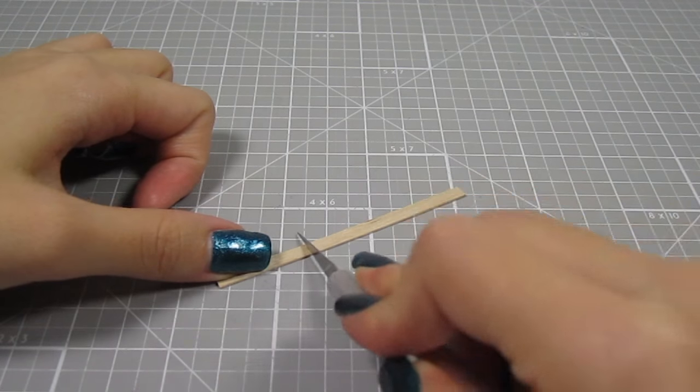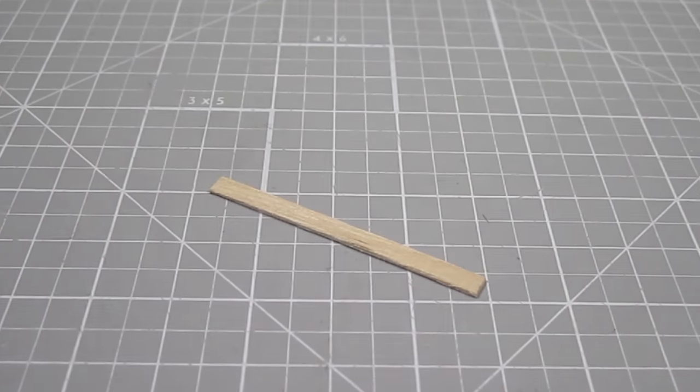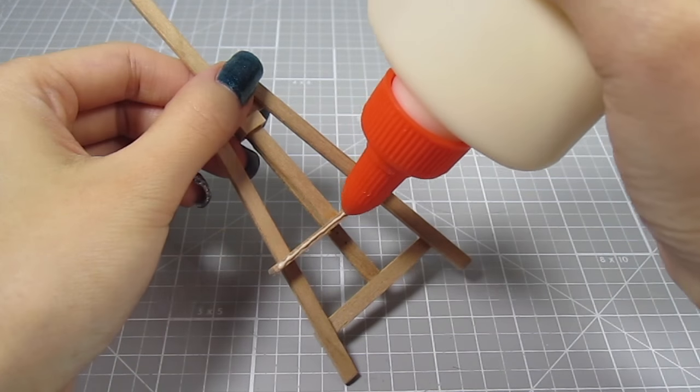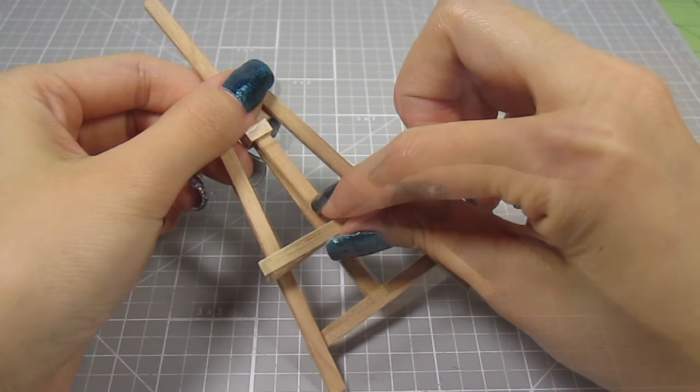Next, let's add a ledge where the canvas will sit. Cut out a 2 inch length from a coffee stirrer. Add wood glue to the horizontal part of the top piece and position the coffee stirrer in place.